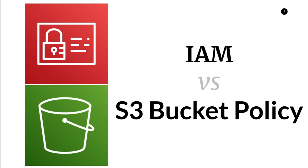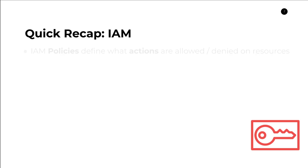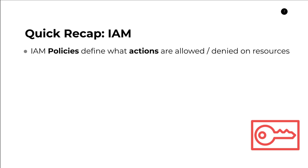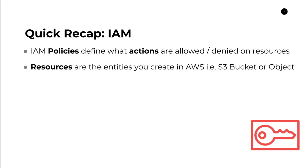So let's just jump right into it. First of all I just want to start with a very brief recap of what IAM is. IAM stands for identity and access management and the main unit in IAM are IAM policies, and policies define what actions are allowed or denied on resources. Now resources are the entities that you create in AWS — so this could be an S3 bucket, an S3 object, a Lambda function, a DynamoDB table, anything like that.